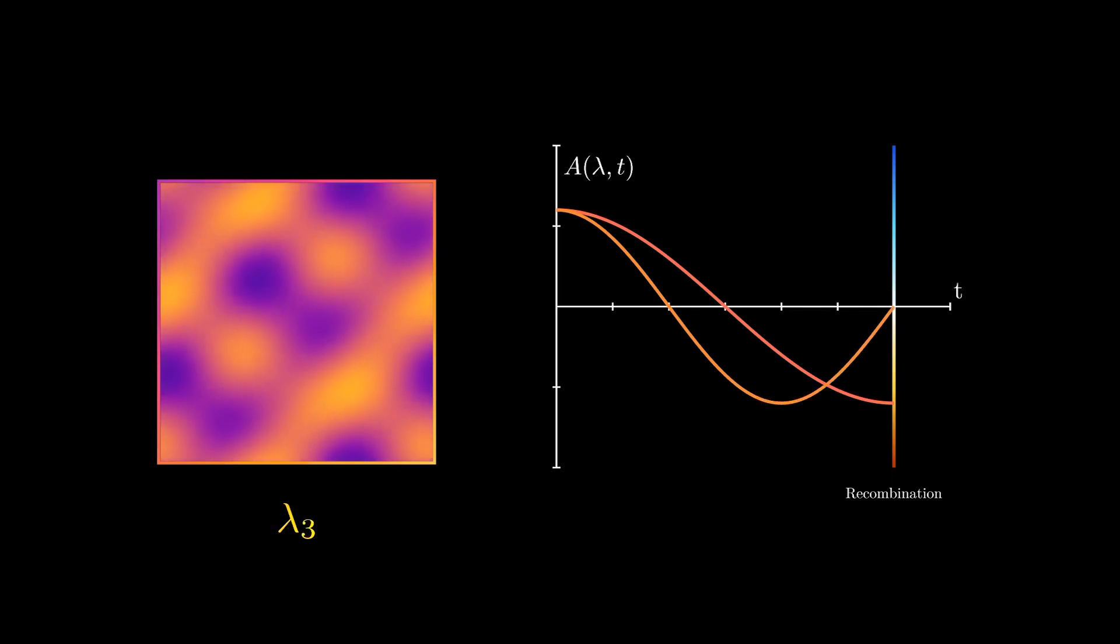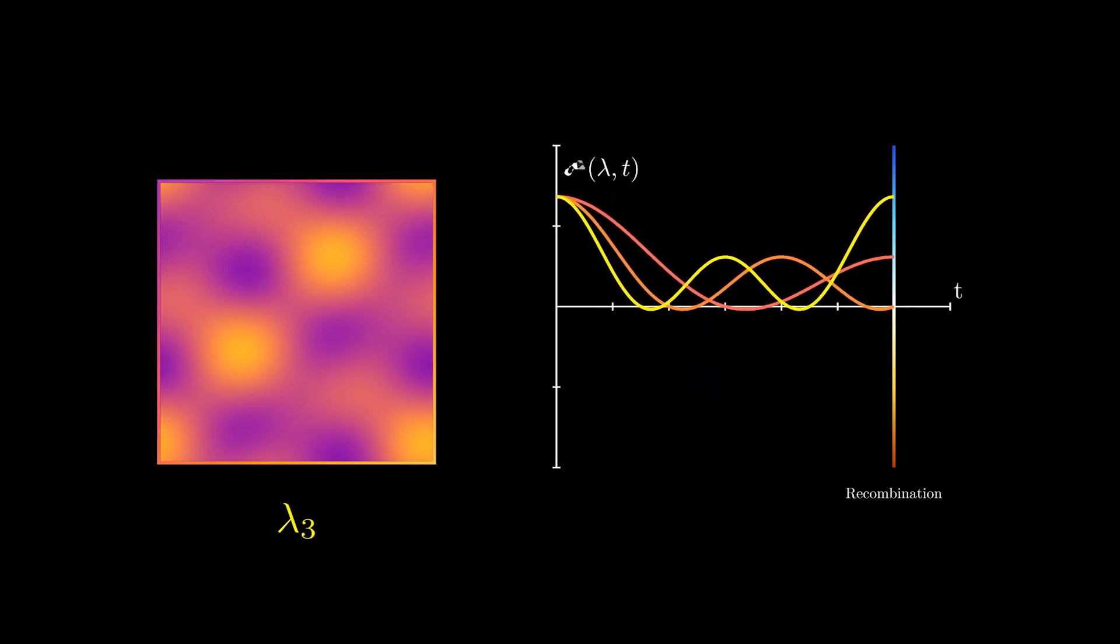The presence of the first peak, which corresponds to features approximately one degree in angular size on the sky, indicates that from the beginning of the fluctuations to the moment of recombination, waves of this size were able to pass through at least one half of an oscillation, from peak to null to peak again, as we can see here.